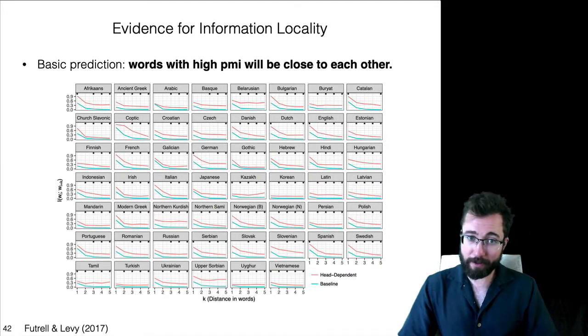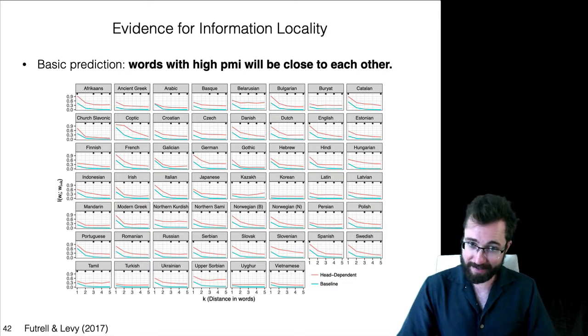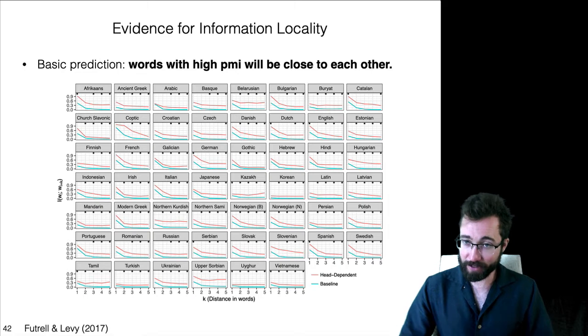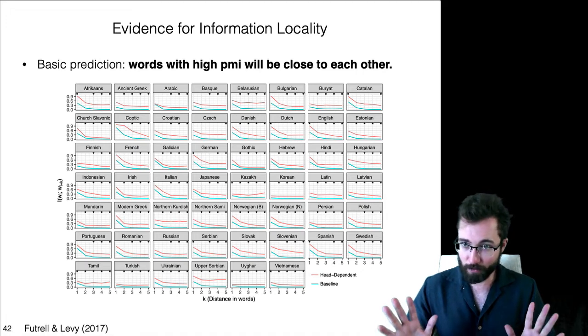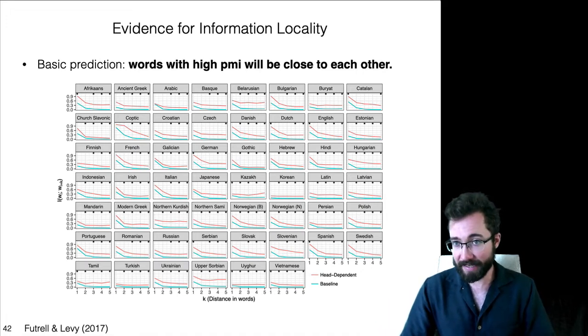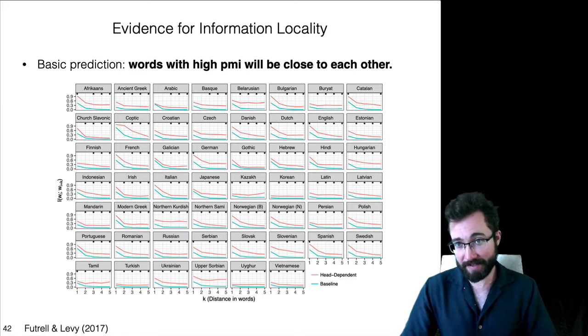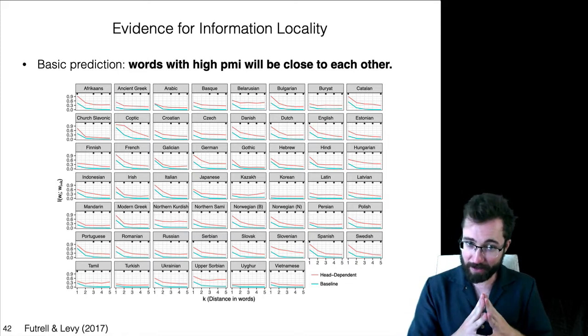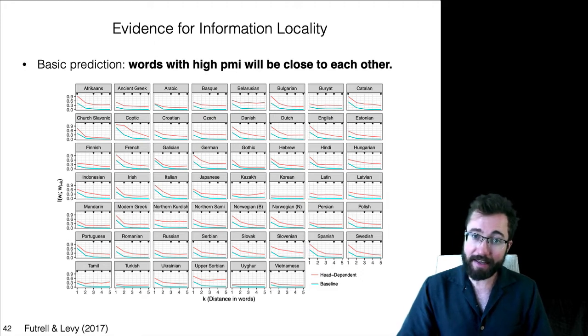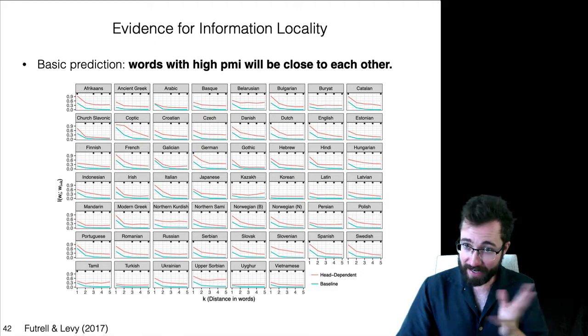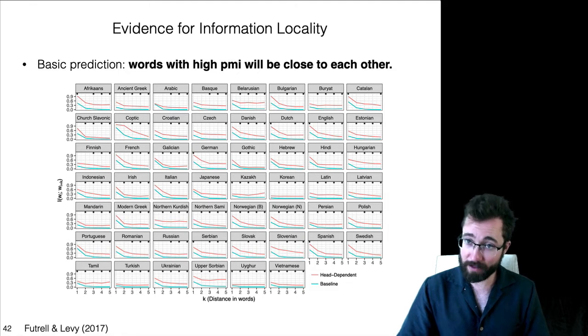So, here we have the empirical PMI among words at different distances in the universal dependencies corpora, again calculated using part of speech tags. In red, we have the mutual information of heads and dependence, and in blue, we have words, all other words that are, whether they're syntactic dependency or not, they're just at some distance. And what we see is that we do see this fall off of PMI with distance. So, the words with high PMI are close across languages. We also see that this is true for syntactic dependencies and for other word pairs, both the red and the blue.